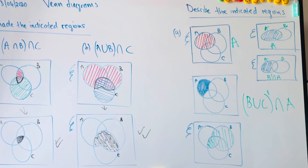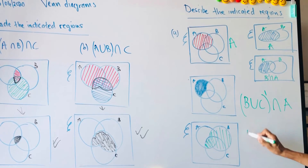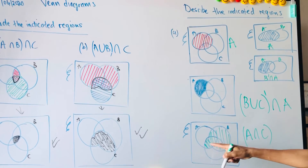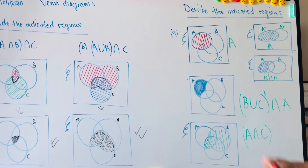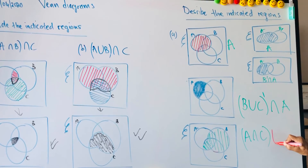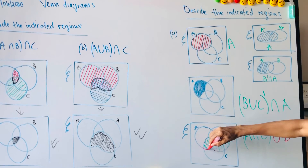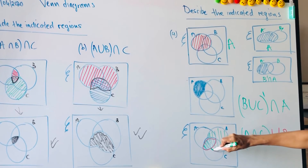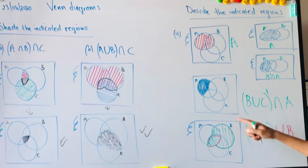For this next region, I look at A and C common — so A intersection C. But then I also have B included. So it's everything that involves A intersection C, and also include B — that's A intersection C, and also B.